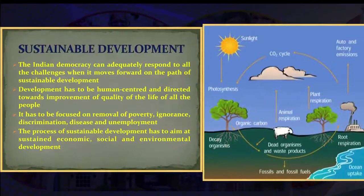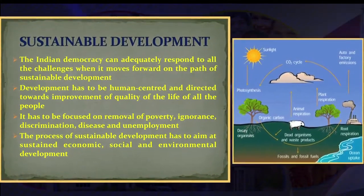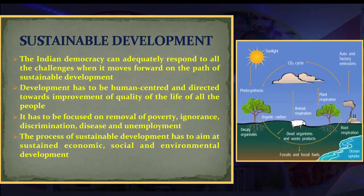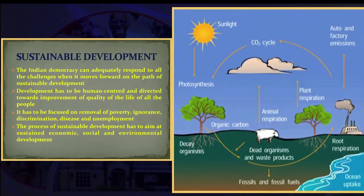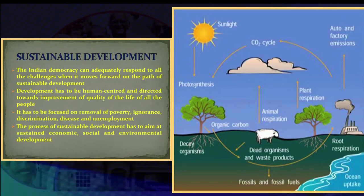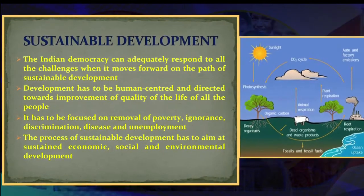Another important corrective measure is sustainable development, dealing with economic, social and environmental dimensions. Indian democracy can adequately respond to all challenges when it moves forward on the path of sustainable development. A model of development that does not take into account the basic needs of millions today and in the future cannot be conducive to the survival of democracy. Development has to be human-centric, directed towards improvement of the quality of life of all people, focused on removal of poverty, ignorance, discrimination, disease and unemployment, and aimed at sustained economic, social and environmental development.